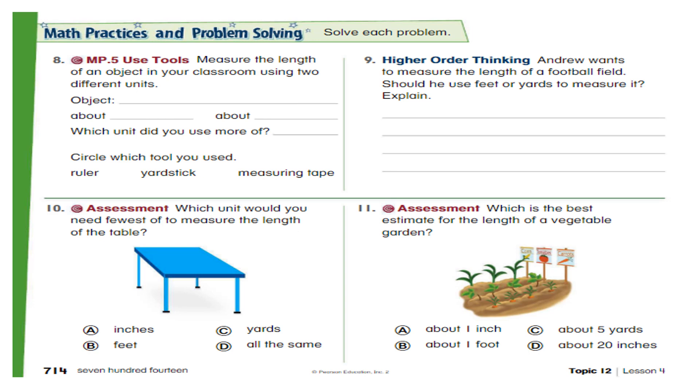Then you used what? You measure that in inches or in feet or in yard. You have to use the two units here on the blanks given. And then which unit did you use more? Just like in question 1 and 2, you have to write here which unit is more. And then circle which tool you used. Do you use the ruler, yardstick or measuring tape?